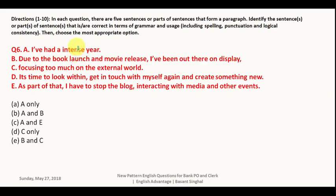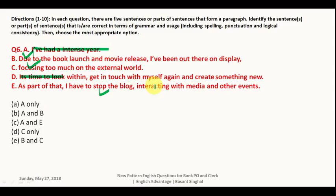Question number six. Part A — 'I have had a intense ear' — 'intense' has a vowel sound, so you need 'an,' making this wrong. Part B — 'due to the book launch and movie release I have been out there on display' — is correct. Part C — 'focusing too much on the external world' — is also correct. Part D — 'it's time to look within, get in touch with myself and create something new' — you have to say 'it is time,' not 'it's time,' so this is wrong. Part E — 'as part of that I have to stop the block' — to maintain consistency you need parallel noun forms: 'stop the blocks, media interactions, and other events,' so this is also wrong. B and C are correct, so your answer is E, that is B and C.